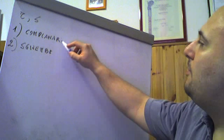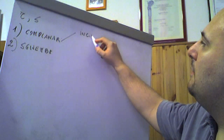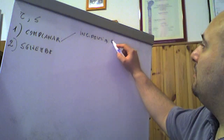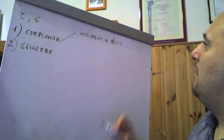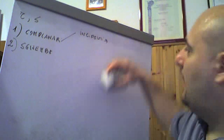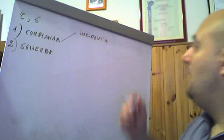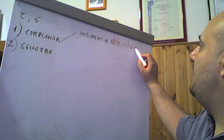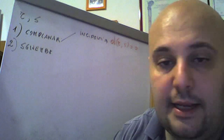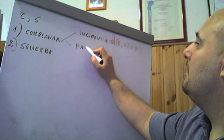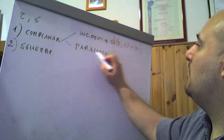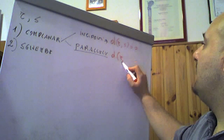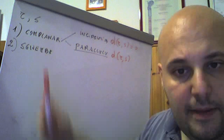Le due rette possono essere complanari. Se sono complanari possono essere incidenti: in questo caso, se sono incidenti, la distanza è nulla. La distanza fra due rette incidenti è evidentemente nulla. Se sono complanari possono essere invece distinte parallele, e in questo caso ci sarà una ben determinata distanza fra R ed S. Se sono sghembe, lo esaminiamo dopo.